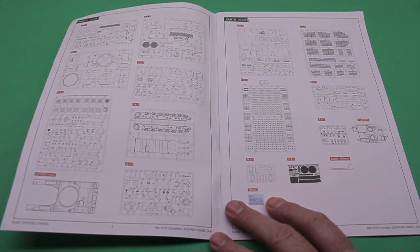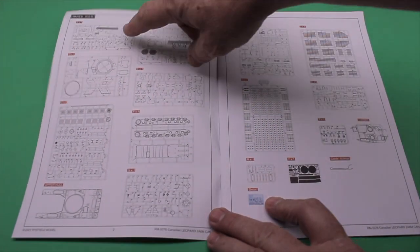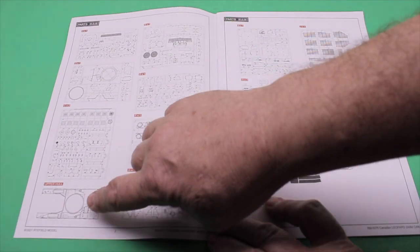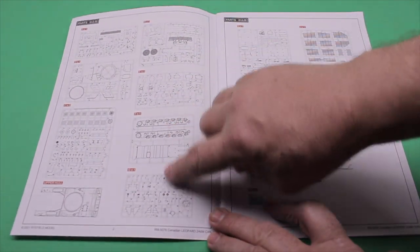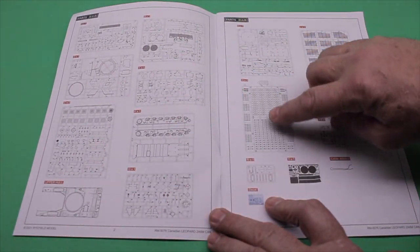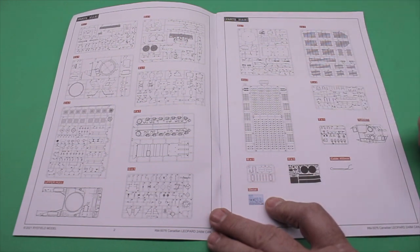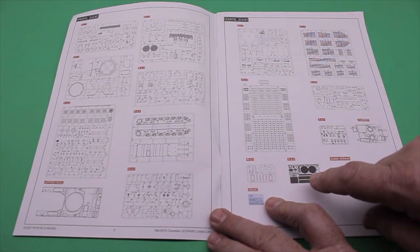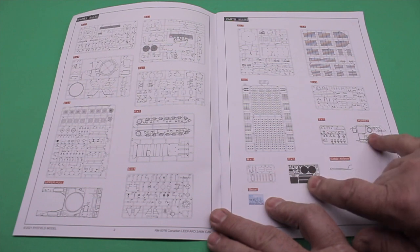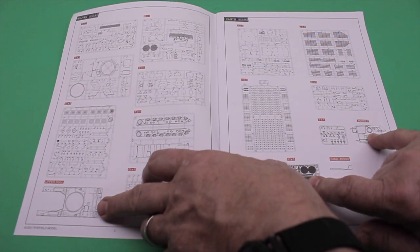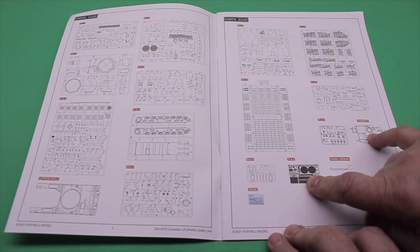Now the first thing you're going to see here is there's a lot of spruce sheets. So you've got 1, 2, 3, 4, 5, 6, 7, 8, 9, 10, 11, 12, 13, 14, 15, 16, 17 sprue sheets and a PE sheet, a turret and upper portion of the lower hull.